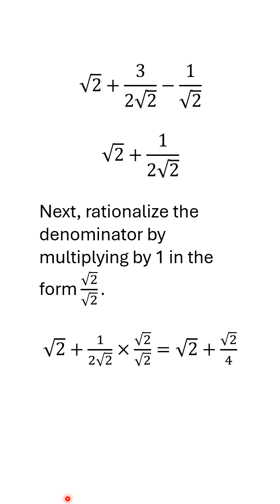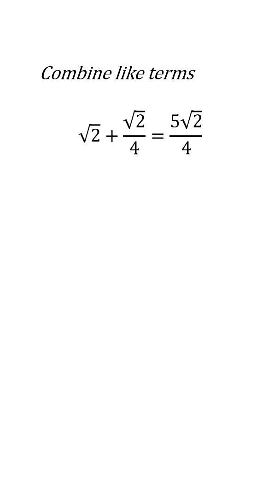Now, it's just a matter of adding 1 square root of 2 plus 1 fourth square root of 2. And we're left with 5 times the square root of 2 over 4.